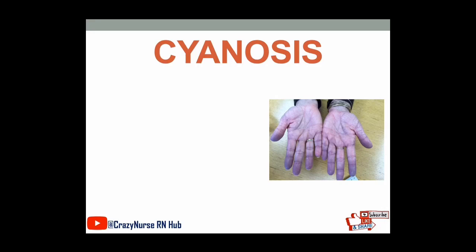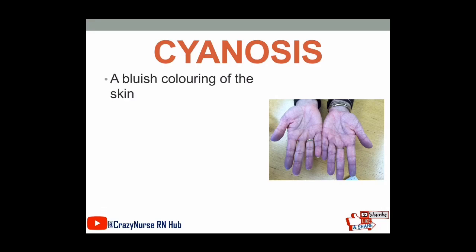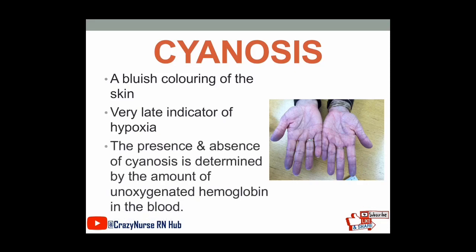We also have cyanosis. It is a bluish coloring of the skin and it is a very late indicator of hypoxia. The presence and absence of cyanosis is determined by the amount of unoxygenated hemoglobin in the blood. Take note that the manifestation of cyanosis is a late sign or late indicator of hypoxia.